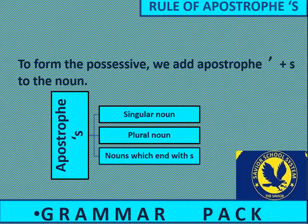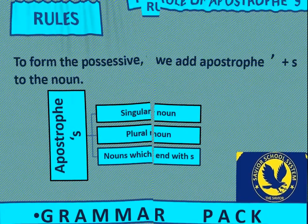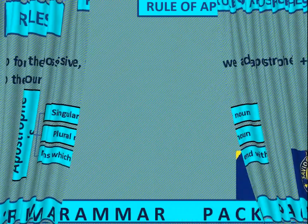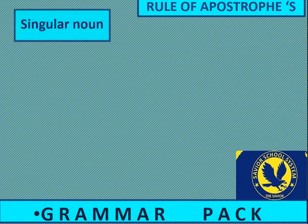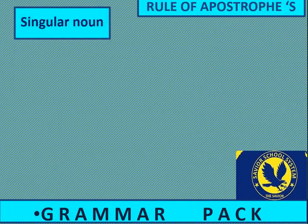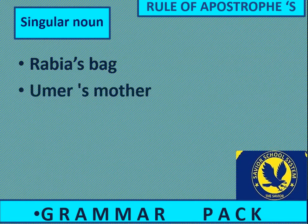To form the possessive, we add apostrophe plus s to the noun. Apostrophe s can be used at three places: singular noun, plural noun, and the noun which ends with s. For singular nouns: Rabya's bear, Umar's mother, Aslam's patience.